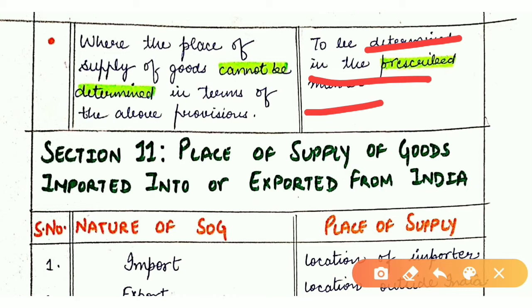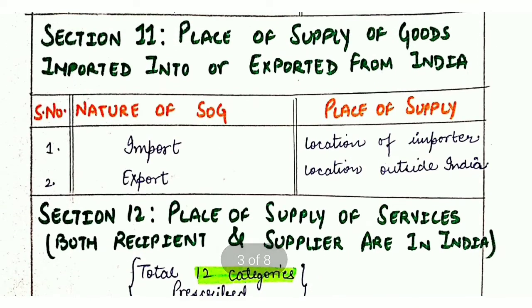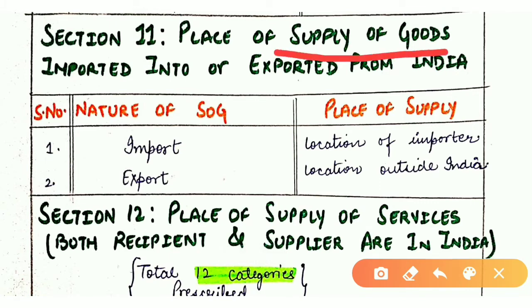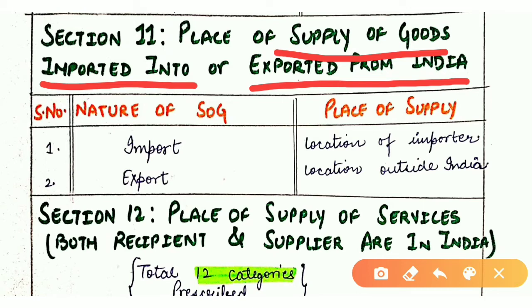Section 11 deals with place of supply of goods imported into or exported from India. In case of imports, the location of the importer is the place of supply. In case of exports, the place of supply is a location outside India.